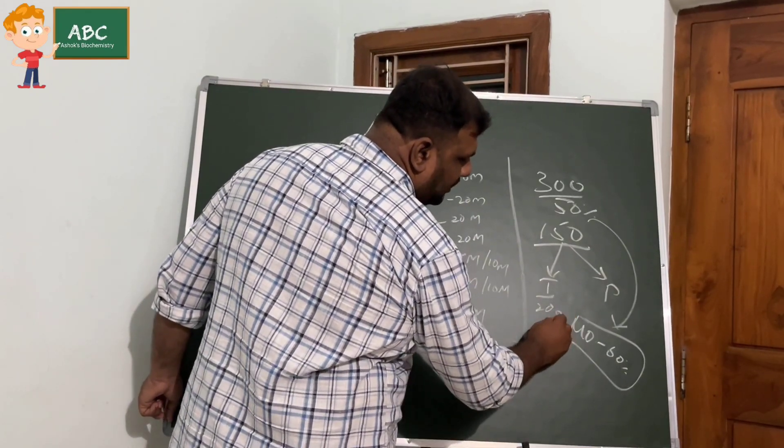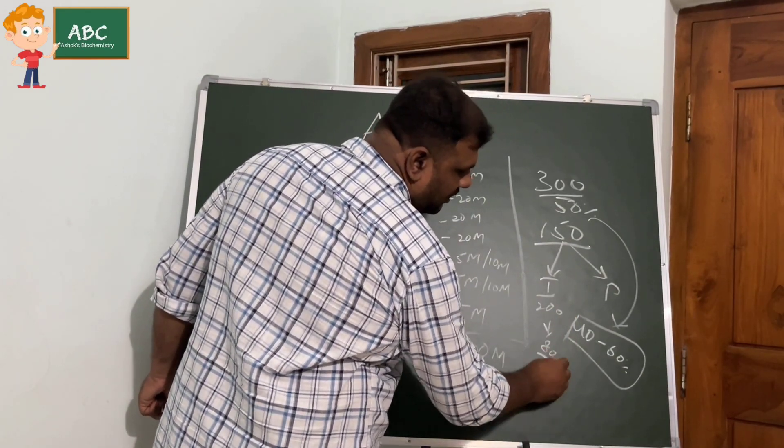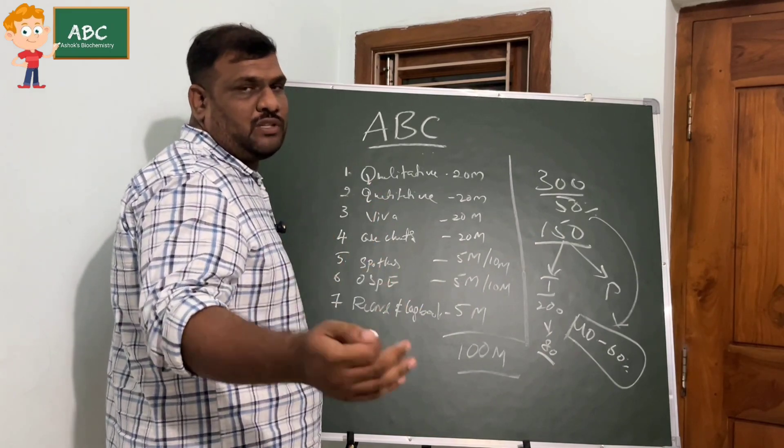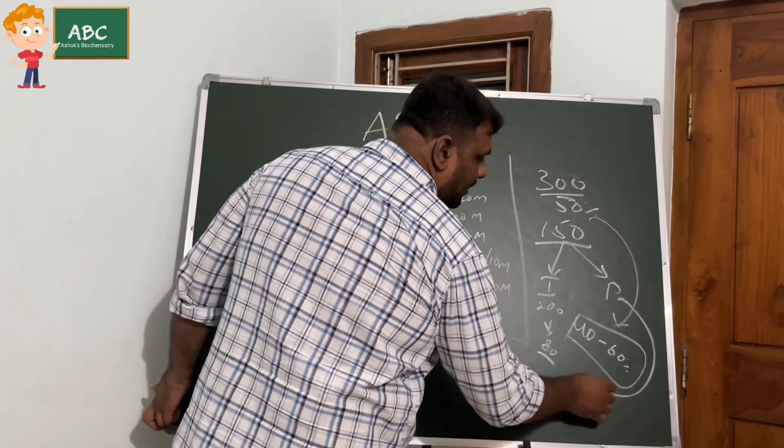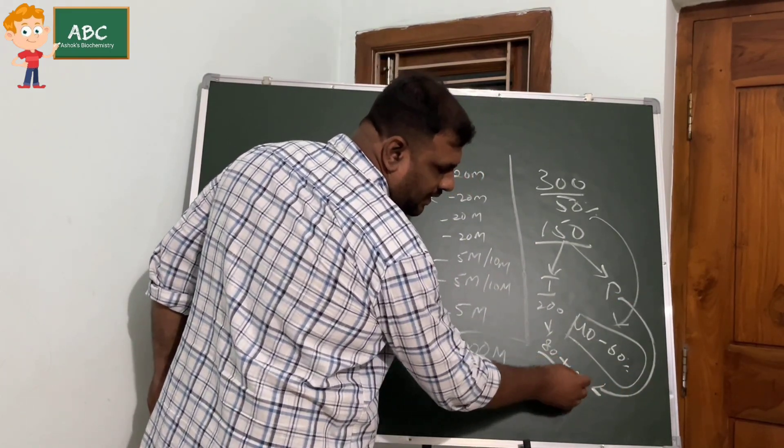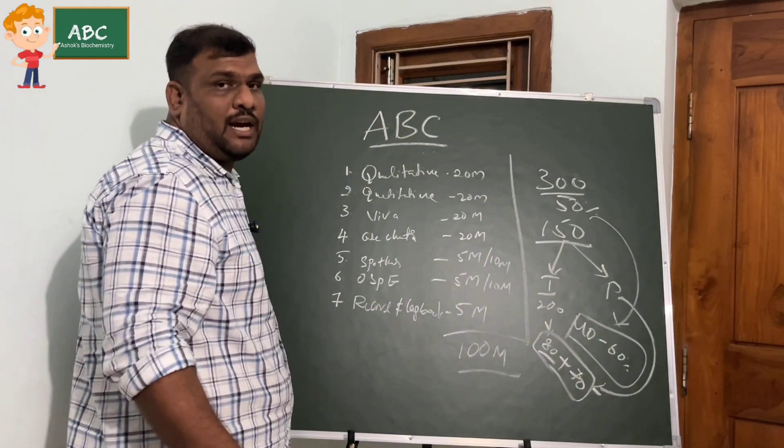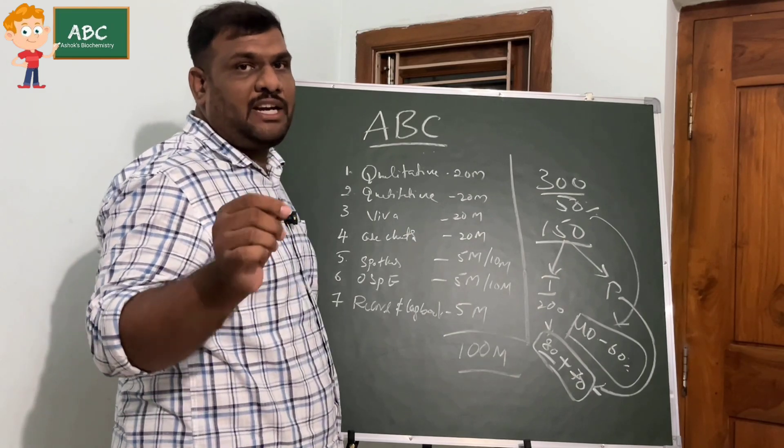You wrote theory for 200 marks where 80 marks together - in paper 1 and paper 2 together, if you got 80 that's enough for passing. When it comes to practical, if you got 80 in theory you should get minimum of 70.